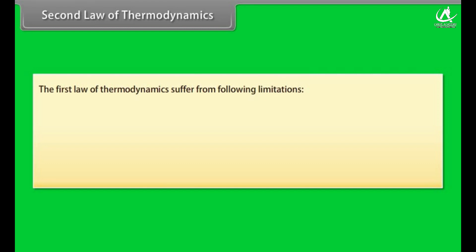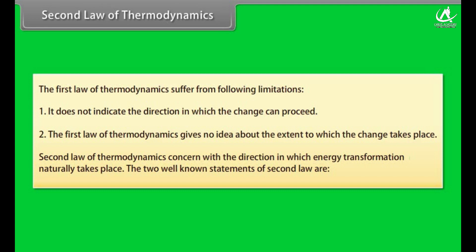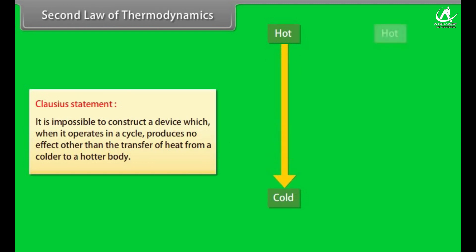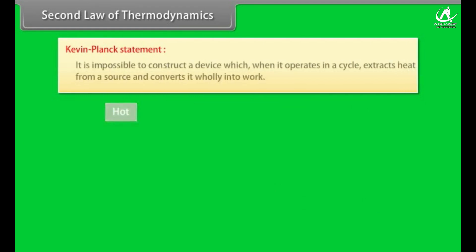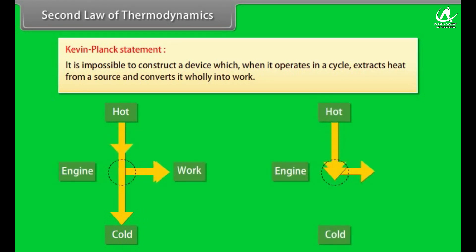Second Law of Thermodynamics: the first law has limitations — it does not indicate the direction in which change can proceed, nor the extent to which changes take place. The second law concerns the direction in which energy transformation naturally occurs. Two well-known statements: (1) It is impossible to construct a device that, operating in a cycle, produces no effect other than the transfer of heat from a colder to a hotter body. (2) It is impossible to construct a device that, operating in a cycle, extracts heat from a source and converts it wholly into work.